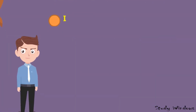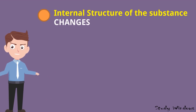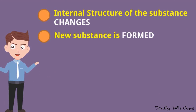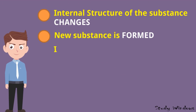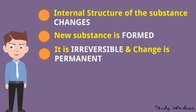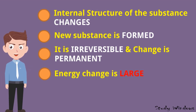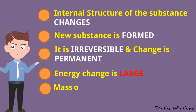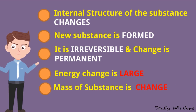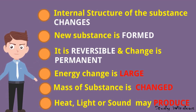The characteristics of chemical change are: the internal structure of the substance changes, a new substance is formed, it is irreversible and the change is permanent, energy change is large, and mass of substance may change due to different kinds of losses — heat, light, or sound may be produced.